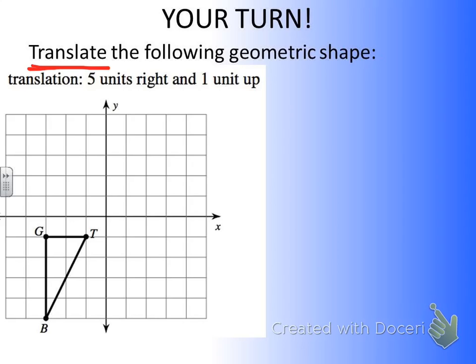So when it says translate, it just wants you to move the shape. The size of the shape doesn't change. The shape doesn't change at all, so it's not going to become a triangle to a quadrilateral or a square to a pentagon. If it's a triangle, it's going to stay a triangle. All we're doing is moving it around the graph.